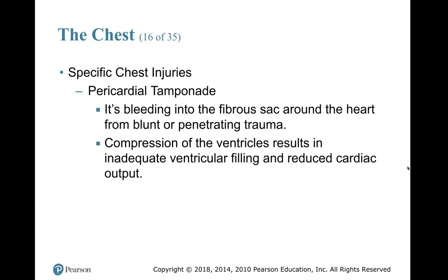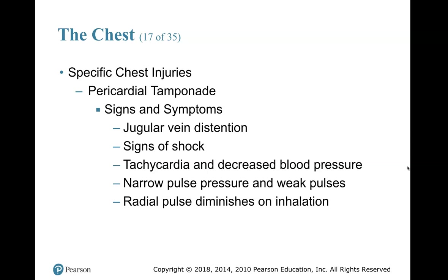Pericardial tamponade — however you pronounce it — is bleeding into the fibrous sac around the heart from blunt or penetrating trauma. That pericardial sac fills up with blood, goes nowhere, and causes compression of the ventricles, resulting in inadequate ventricular filling and reduced cardiac output. Signs and symptoms include jugular vein distension, signs of shock from bleeding, tachycardia, decreased blood pressure, narrow pulse pressure, weak pulses, and the radial pulse diminishes on inhalation — because inhalation puts pressure on the thoracic cavity, compressing the already-full pericardial sac and slowing or diminishing the pulse.